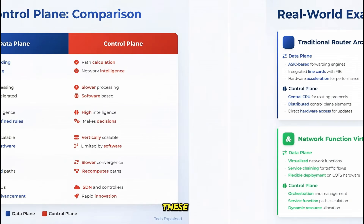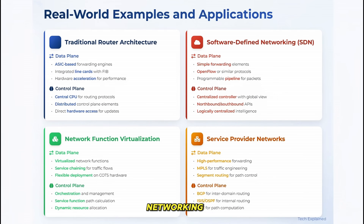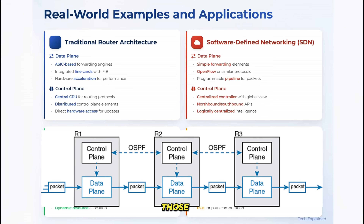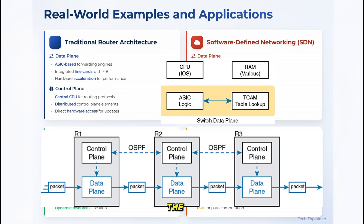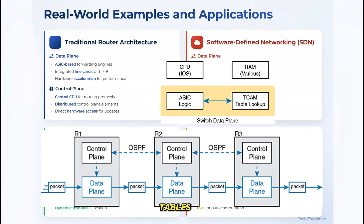Let's look at how these concepts play out in real-world networking scenarios. In traditional router architectures, like those from Cisco or Juniper, we see a clear separation between the control plane — running on the main CPU — and the data plane, often implemented in specialized ASICs. The CPU runs routing protocols, builds routing tables, and then downloads the forwarding information to the ASICs, which handle the actual packet forwarding.